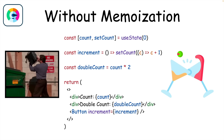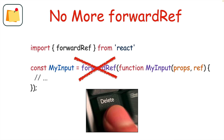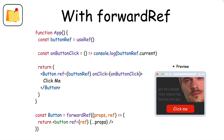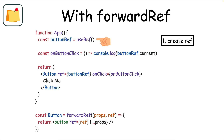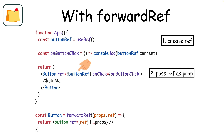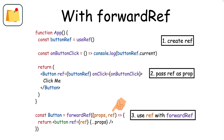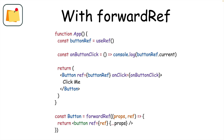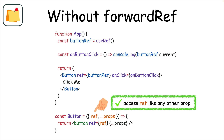In React 19, you also no longer need to use the forwardRef function. Up until now, if you wanted to pass a ref to a child component, you would first create a ref, then pass that ref as a prop to your child component. But to access it, you had to use forwardRef. Now, without forwardRef, take a look at the difference — we can pass ref as a prop and use it just like we would any other prop, which is a really nice improvement.